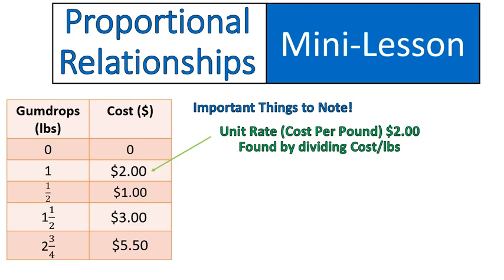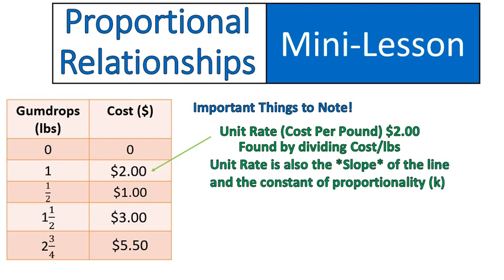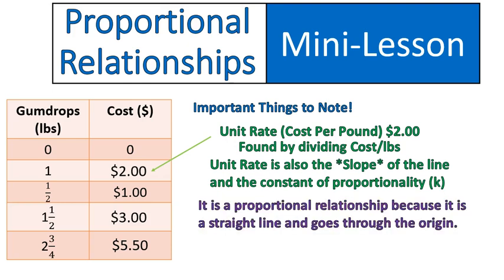Because the unit rate is a constant, it will become what we call the slope of the line, and we've also called it the constant of proportionality, or k, in different equations that we have written in the past. It's a proportional relationship because it's a straight line, and it goes through the origin. That's also important to note.